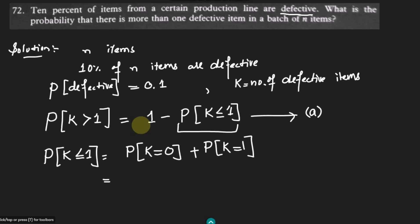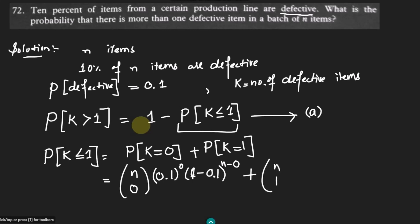According to the binomial probability law, for P(k = 0) I use n choose 0, times 0.1 to the power 0, times (1 − 0.1) to the power n. Similarly, for P(k = 1) I have n choose 1, times 0.1 to the power 1, times (1 − 0.1) to the power (n − 1).